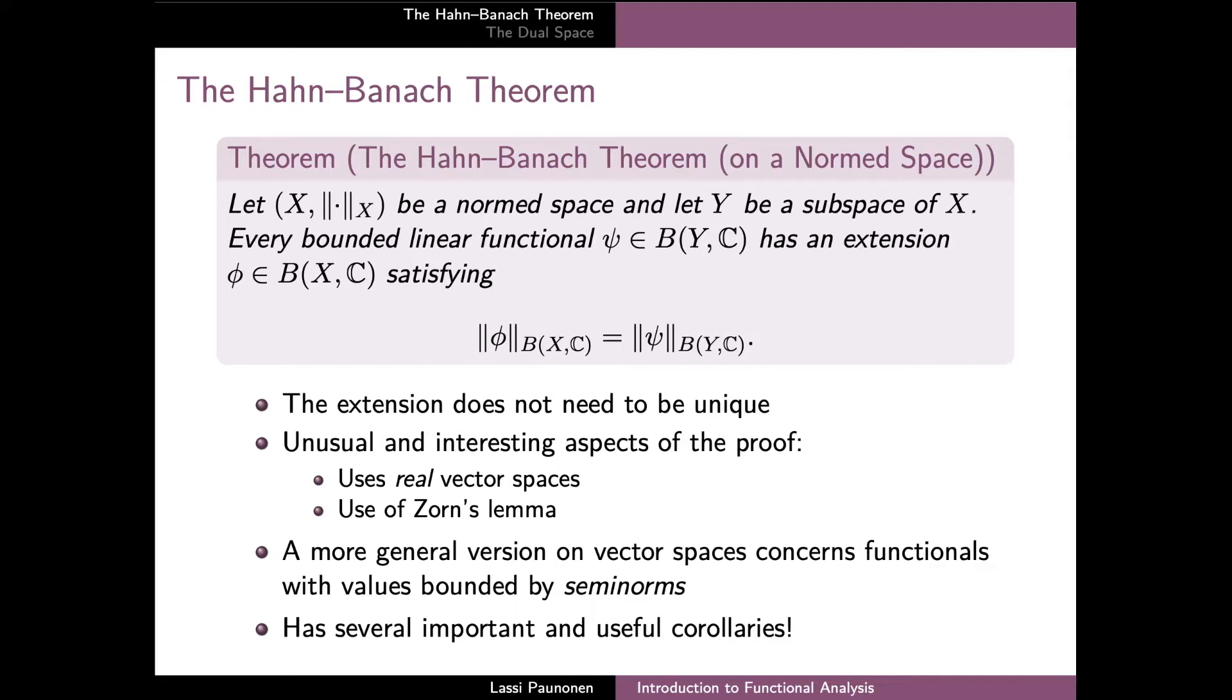The result we've presented here is one version of the Hahn-Banach theorem, particularly modified for the case where X is a normed space, and the more classical version of the theorem also holds for vector spaces, and in that case the values of the original functional are instead assumed to be bounded by values of a semi-norm, which are otherwise like norms, but which can also have the value zero for non-zero elements of the space. The conclusion of that more general version is that the original functional Psi can again be extended to the full space, and also the values of the extension are then bounded by the same semi-norm.